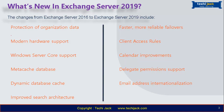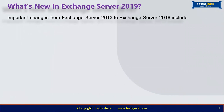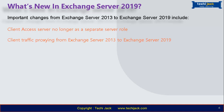Now let's look at the changes from Exchange Server 2013 to Exchange Server 2019. An important change is that the Client Access Server is no longer a separate server role. In Exchange Server 2013 the Client Access Server was a different role, but in Exchange Server 2019 it no longer exists as a separate role. Instead, client access services run on the mailbox server and provide client authentication, redirection, and proxy using well-known protocols such as HTTP, SMTP, IMAP, and POP.